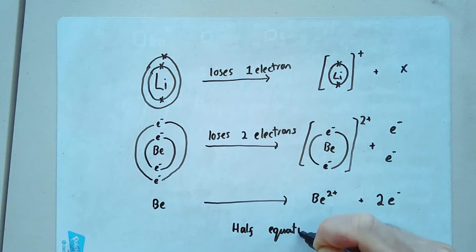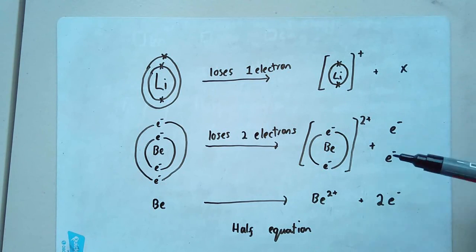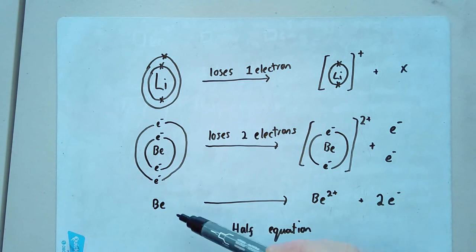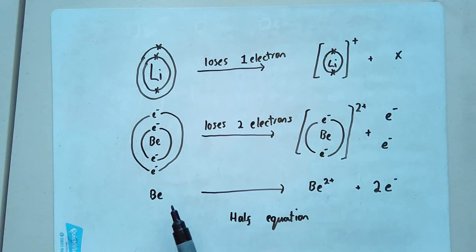The reason why it's called a half equation is because it's really only half of what's happening. Because I said to you, remember I said to you a couple of minutes ago, that where's this electron gone? It's probably gone to a different atom somewhere. So that's the other half of this equation. But if I only want to focus on the beryllium, this is what I get. I get a half equation that has the beryllium turning into the beryllium ion, and those two electrons being lost.